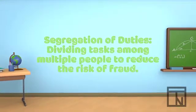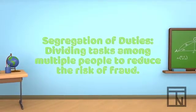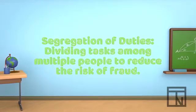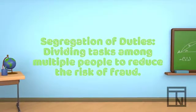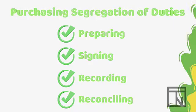Splitting up tasks, like check writing, across multiple people is known as segregation of duties and is one of the simplest and most common internal controls used to reduce fraud risk. There are four essential functions in the check writing process that can be segregated and assigned to different people: preparing the check, signing the check, recording the purchase in the accounting system, and reconciling the check purchase with bank records.